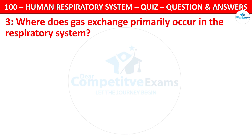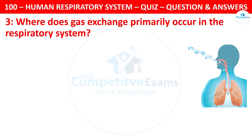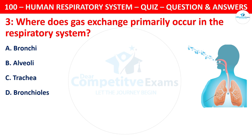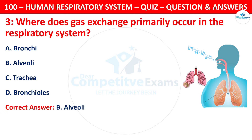Question 3. Where does gas exchange primarily occur in the respiratory system? Your options are: bronchi, alveoli, trachea, or bronchioles. The correct answer is B, alveoli.